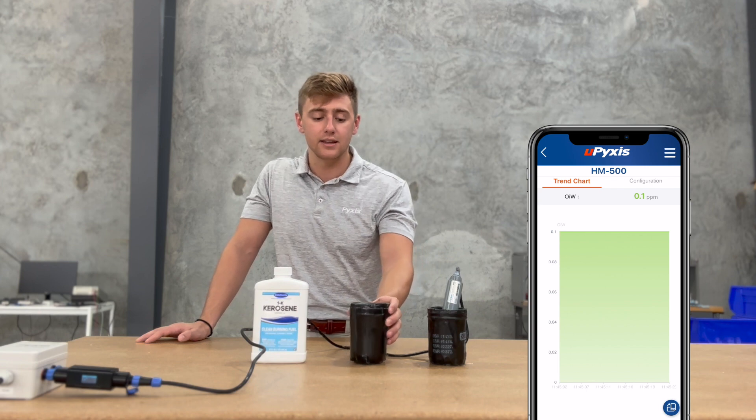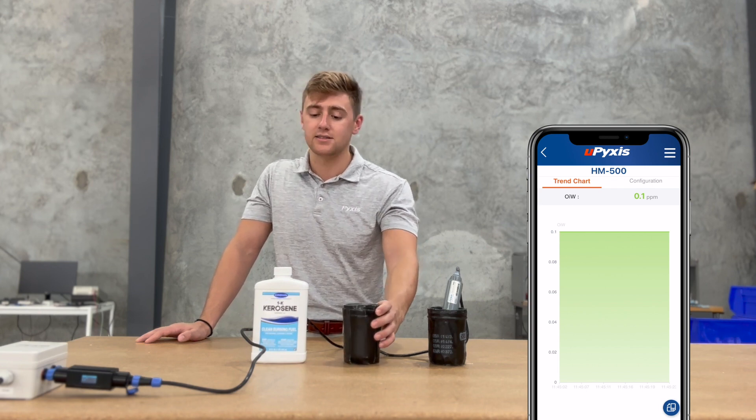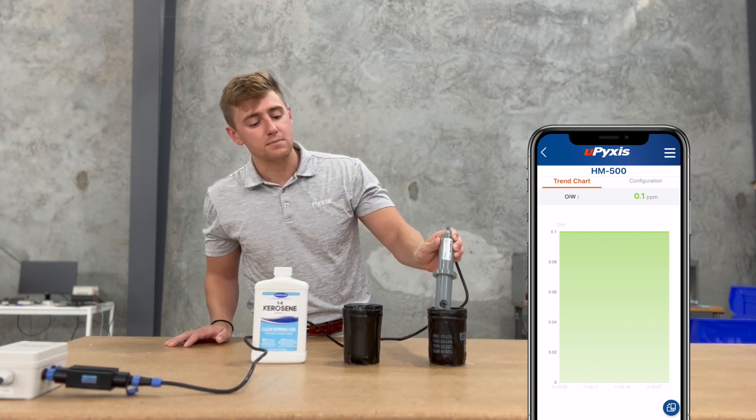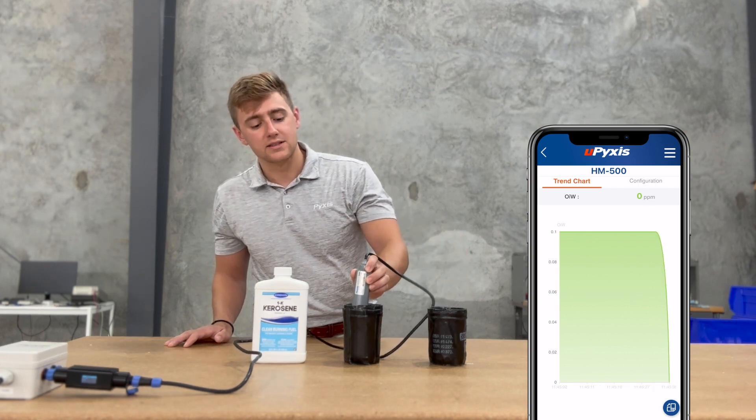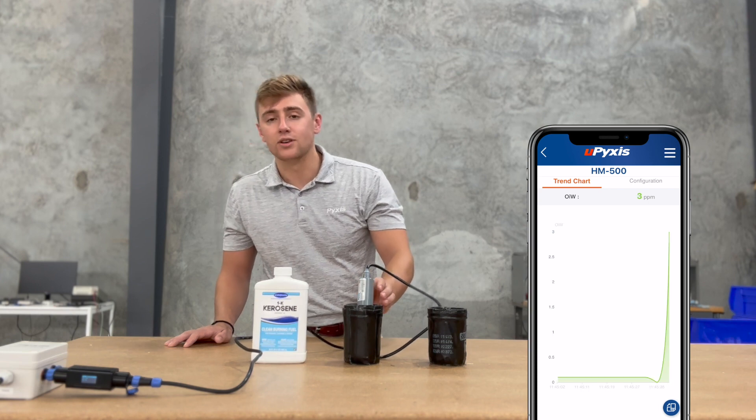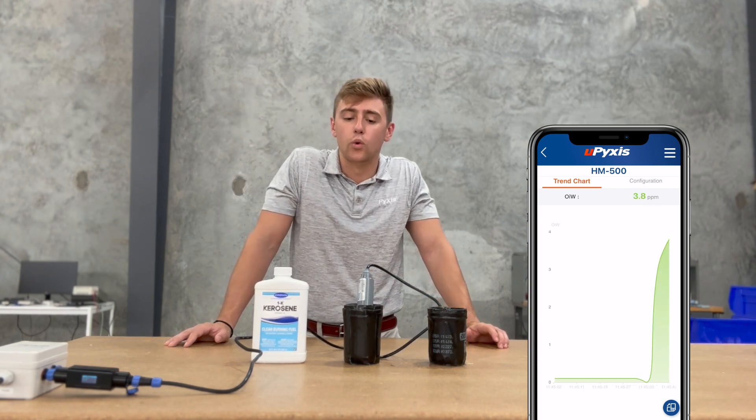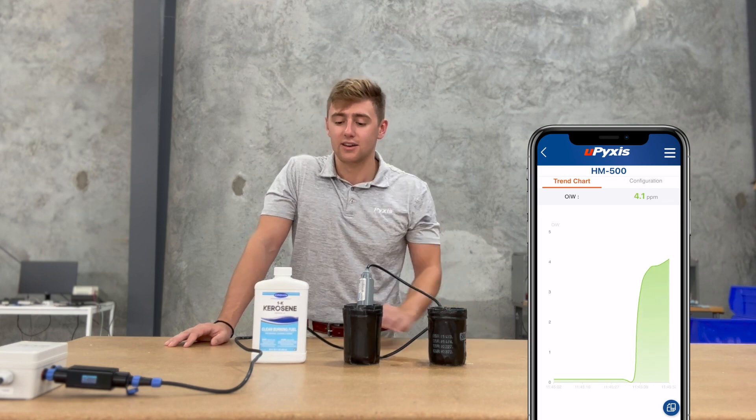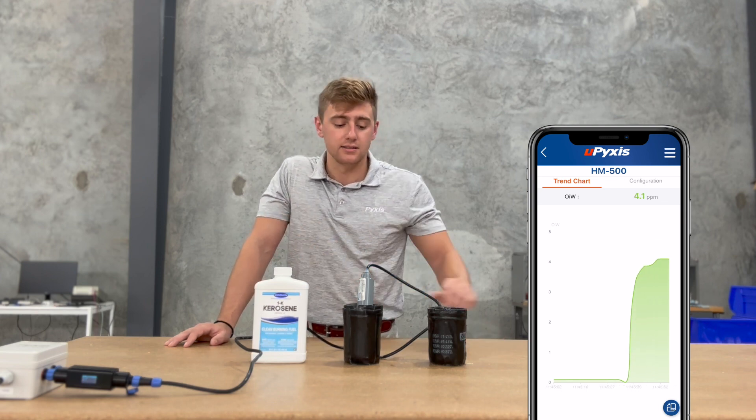And then I created a little solution here that has a little bit of kerosene and tap water to give us roughly about 5 ppm. So we're going to swap the sensor over. And on Pixis you can see that it's reading right around 4 to 5 ppm based on what we thought the concentrate would be creating it with tap water and kerosene.